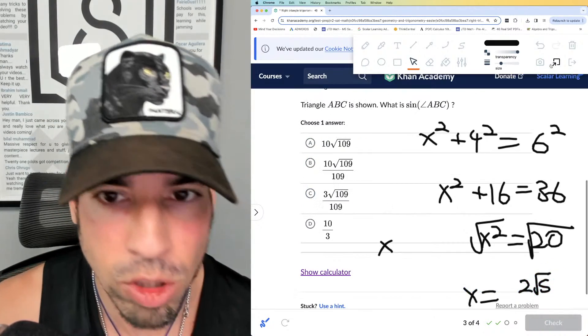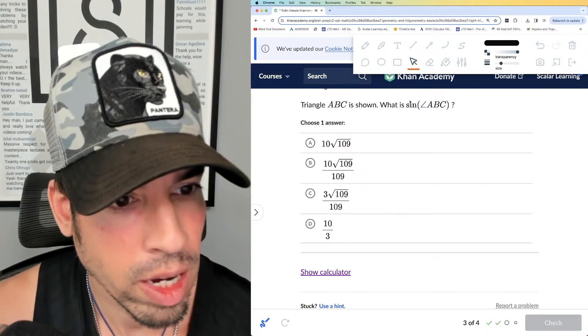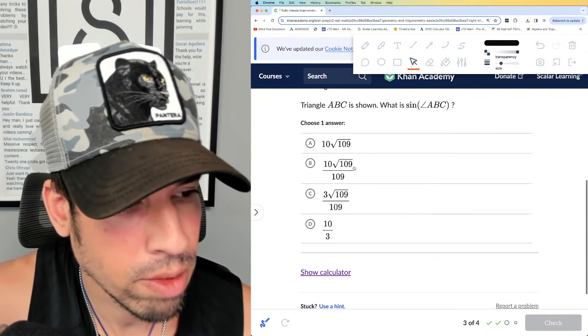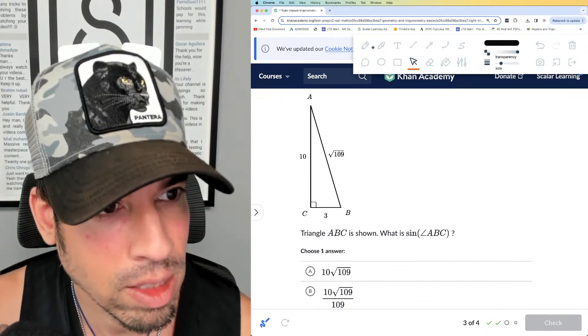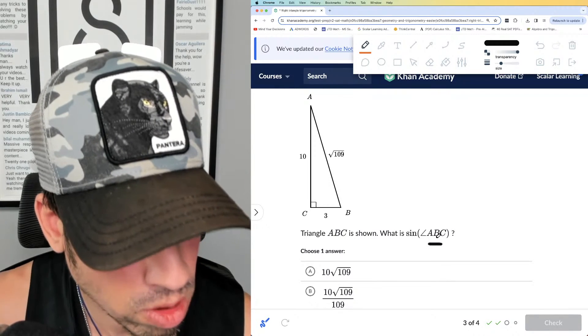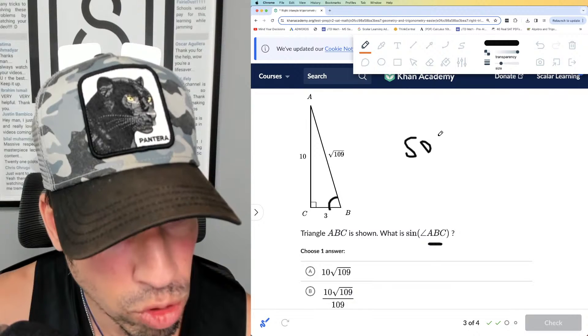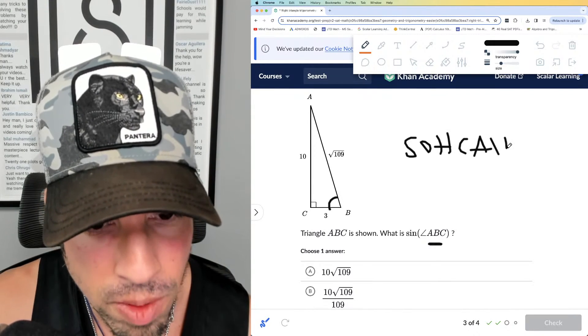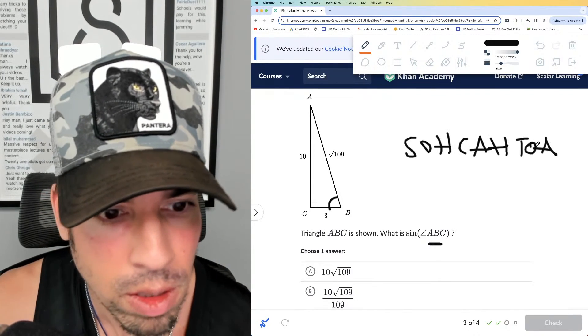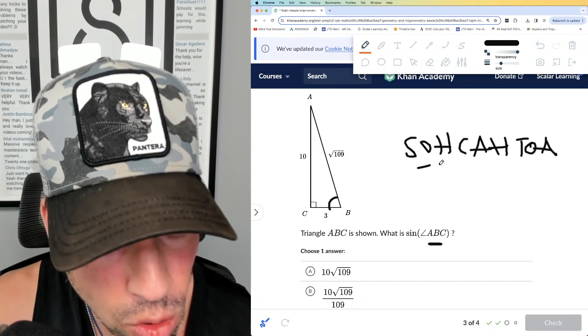Question number three. Triangle ABC is shown, what is sine of ABC? So again, that's angle B, right—the center letter. So ABC, so sine, going back to SOHCAHTOA—and sine is opposite over hypotenuse.